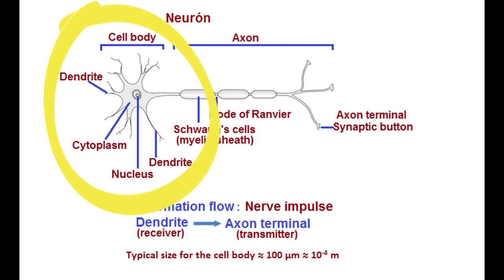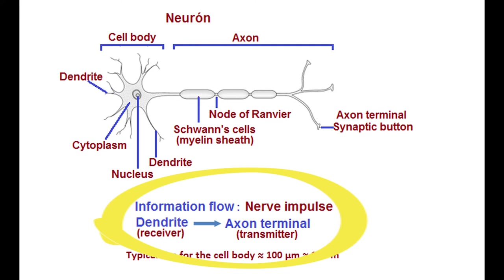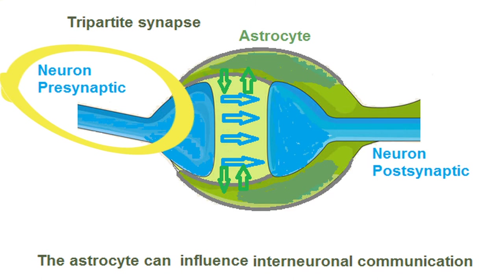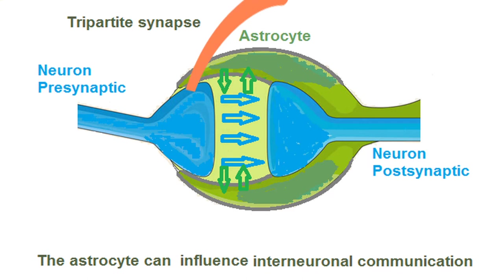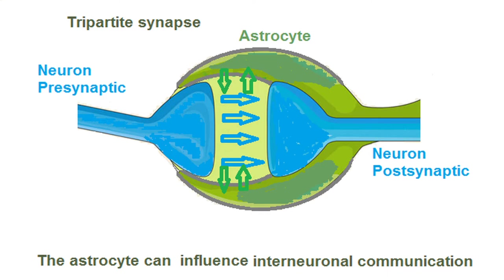On the neuron on the left you have the cell body with several dendrites; in the center, the axon; to the right, the axon terminal. The information or nerve impulse flows from left to right, from the dendrites to the axon terminal — the synapse. On the left is the axon terminal of the presynaptic neuron; to the right, the dendrite of the postsynaptic neuron. In this connection there are two neurons and one astrocyte: a tripartite synapse. The astrocyte can influence and modulate interneuronal communication by means of gliotransmitters.